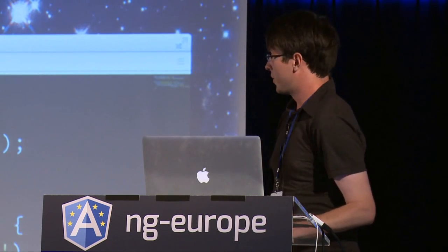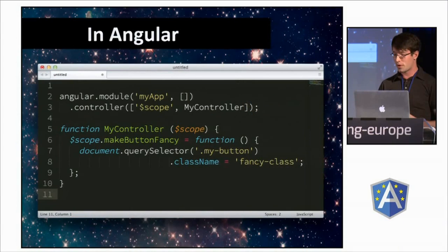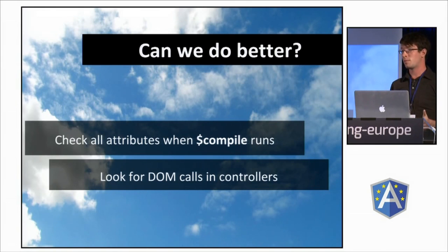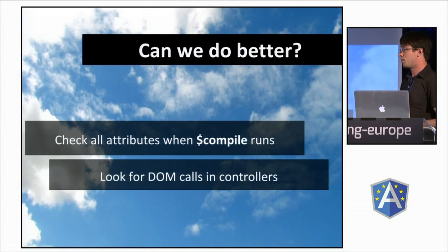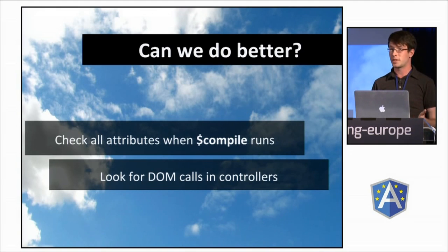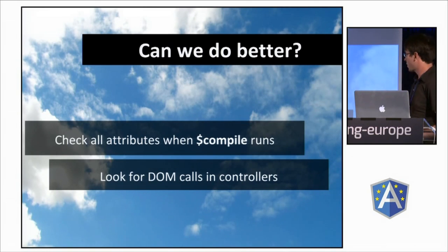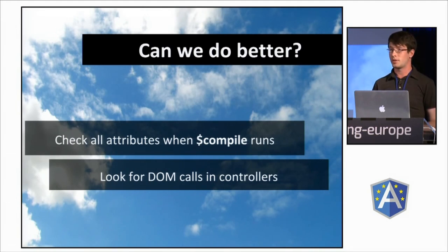A concrete example in Angular is when you grab some element inside your controller and do things to it. There are actually semi-obvious solutions: we can check all of the attributes of compiled elements against a list of all the directives that Angular expects to see. Then we could use something like an autocorrect algorithm — the same sort of thing you see on your phone — and say 'ng-clock, do you mean ng-click?' Similarly, there are some tricks to figure out whether DOM manipulations are happening inside your controller.